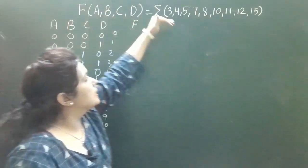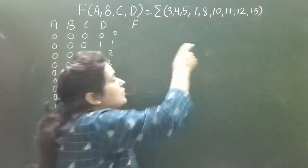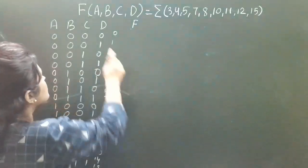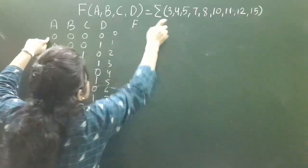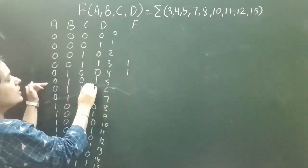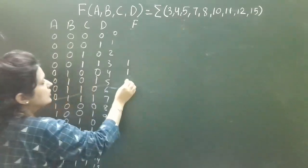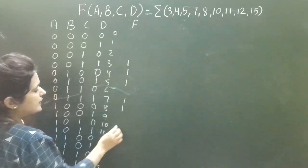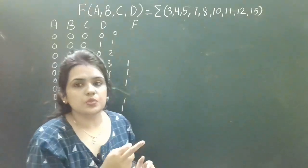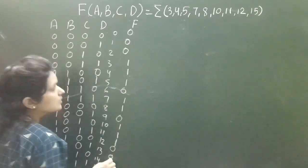F is the output. The meaning of this Boolean function is that we get the output high — F equals 1 — on these minterms: when A, B, C, D equals 3, 4, 5, 7, 8, 10, 11, 12, and 15. We write a 1 for those minterms and a 0 for all others.